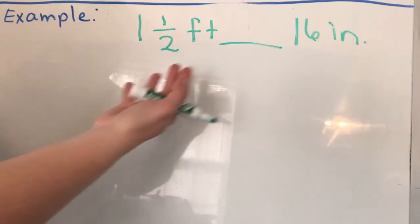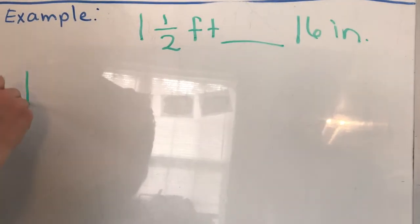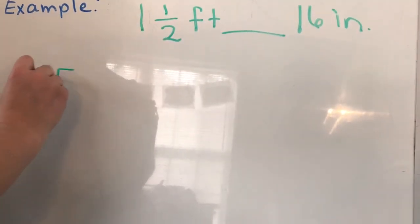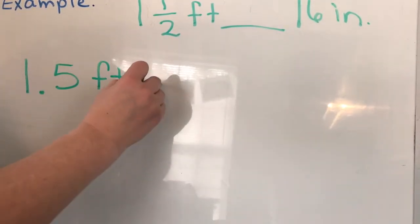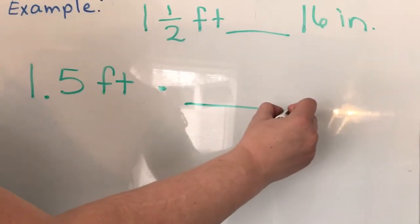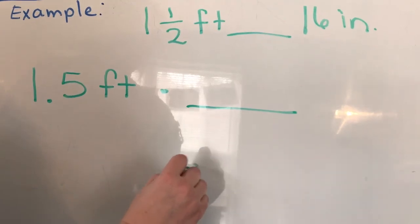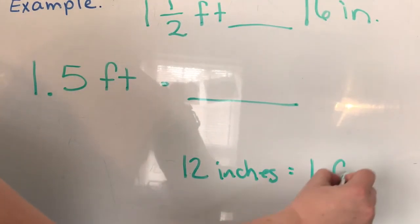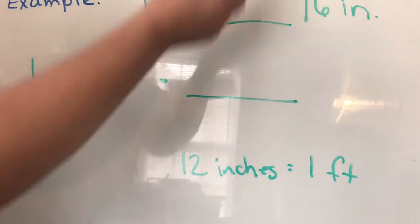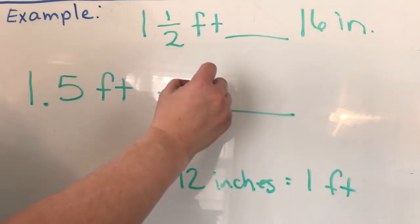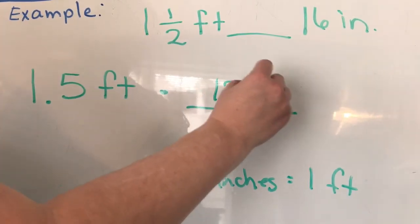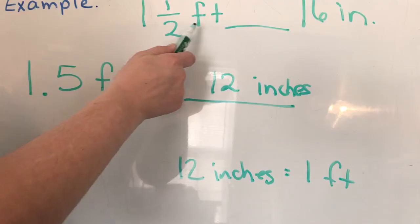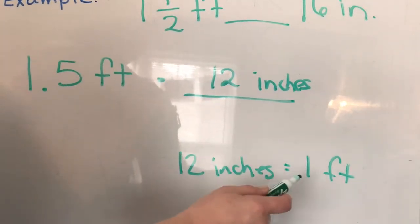And we're going to convert it to inches. One and one half foot. I'm going to go ahead and say 1.5 feet times conversion. We know that there are 12 inches in a foot. And so we're going to take what we want, which is on top. We want to get to inches. 12 inches.